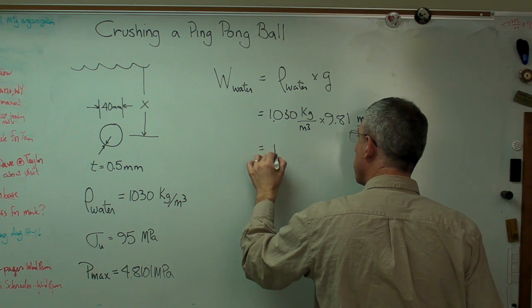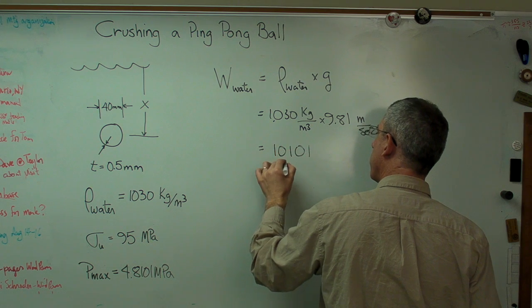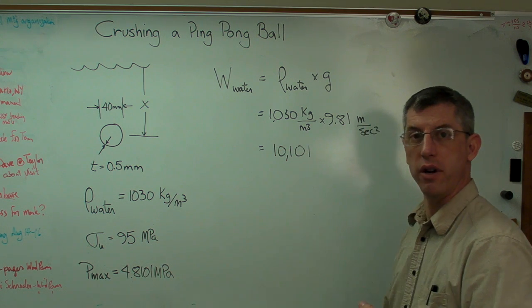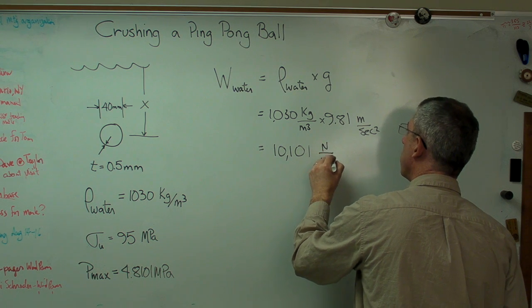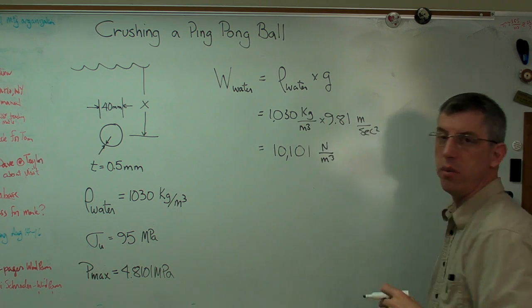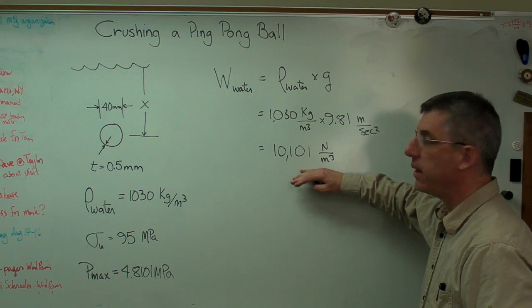And if you work that out, you get this funny number. It looks like it's in binary. 10,101 newtons per cubic meter. So we're going to get kilogram meter per second squared per meter cubed. It's a funny unit. But that's the weight density.